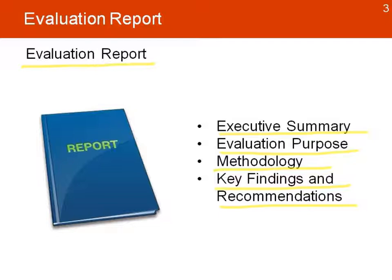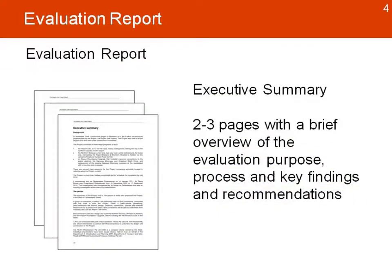But in summary, these are the key elements of the report. The first one, executive summary, is a two or three pages with a brief overview of the evaluation, its purpose, process, and key findings and recommendations. This is useful for senior management or any person who's busy, who doesn't want to read a 50-page document, but wants to look at it in three pages and have an understanding of what the evaluation was and what are the key recommendations.